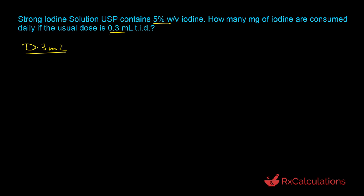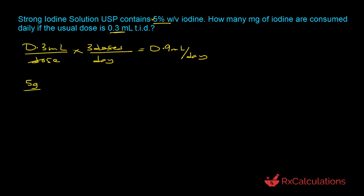The 0.3 milliliters is the volume for one dose, but notice that you are taking three doses in one day. So you have 0.3 mL times three, which gives us 0.9 milliliters per day. Now that we know the volume the patient takes per day, we can use the percentage concentration given as five percent — implying five grams of iodine in 100 milliliters of iodine solution. We set up a proportion to determine how many grams will be present in 0.9 milliliters, which is the daily volume.